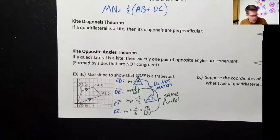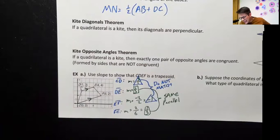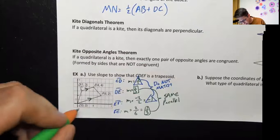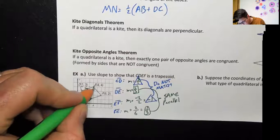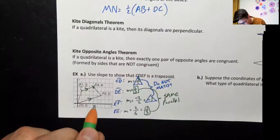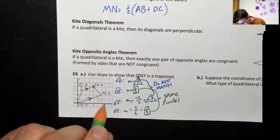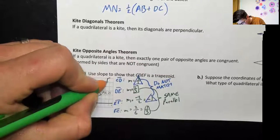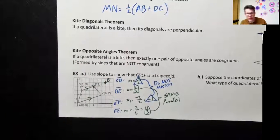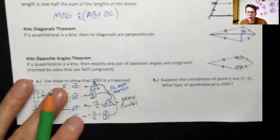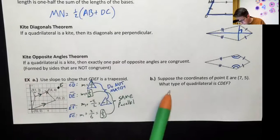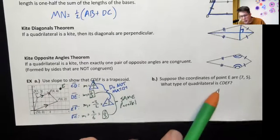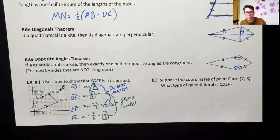Now for the you-try problem: suppose point E is now located at (7, 5), changing its position on the graph. We're going to figure out what type of quadrilateral CDEF becomes with this new location. Slope is still going to be the main tool. Slopes CD and FC don't involve point E, so they stay the same — but DE and EF both involve point E, so you'll need to recalculate those two slopes.